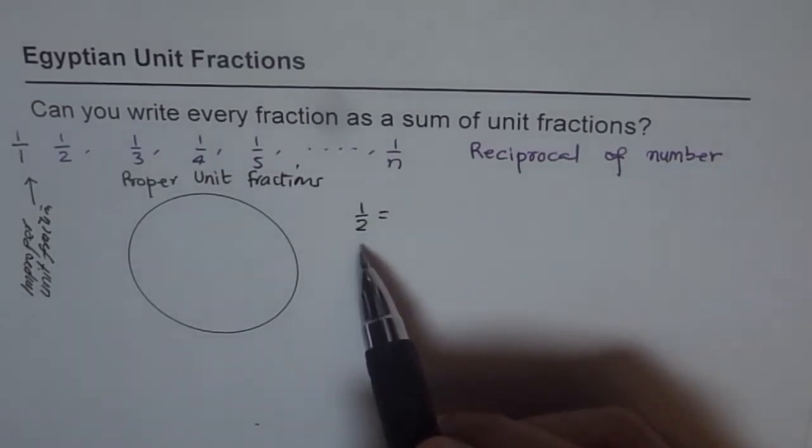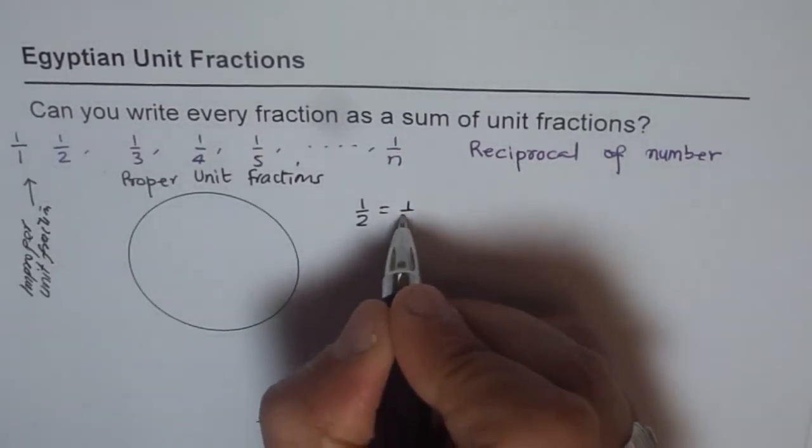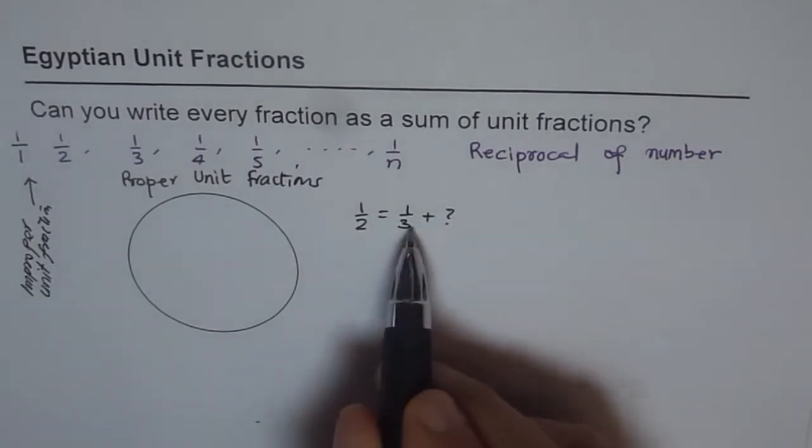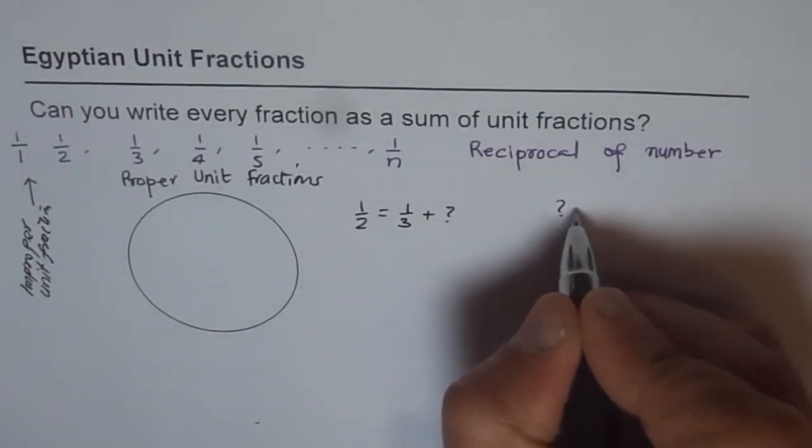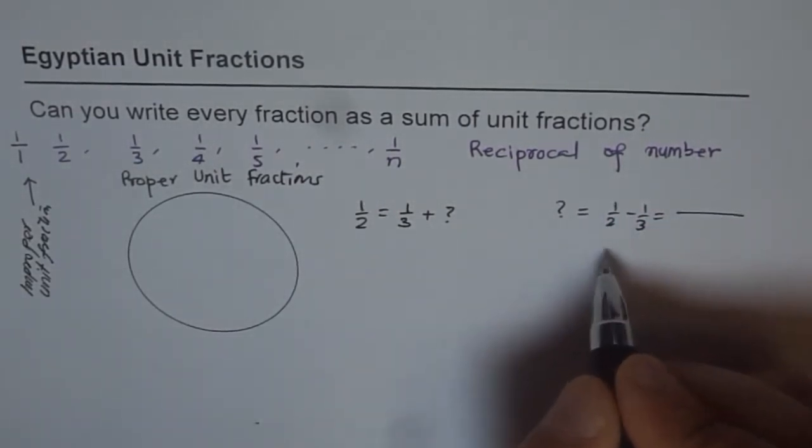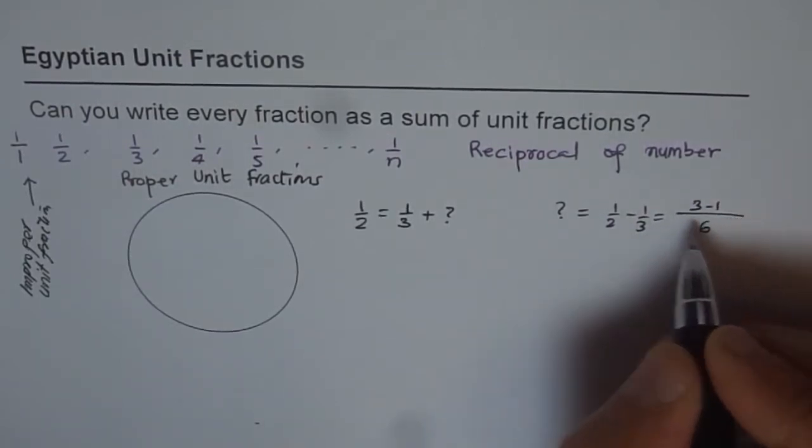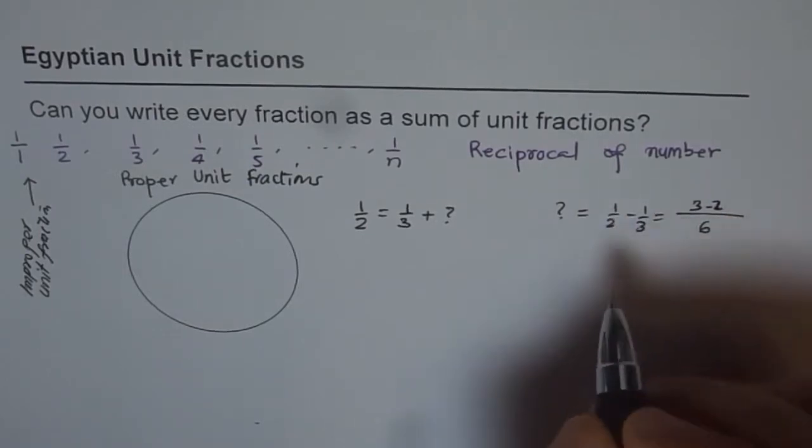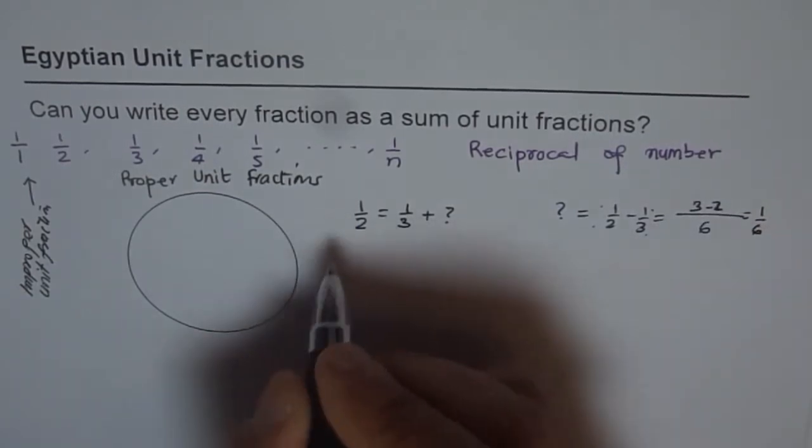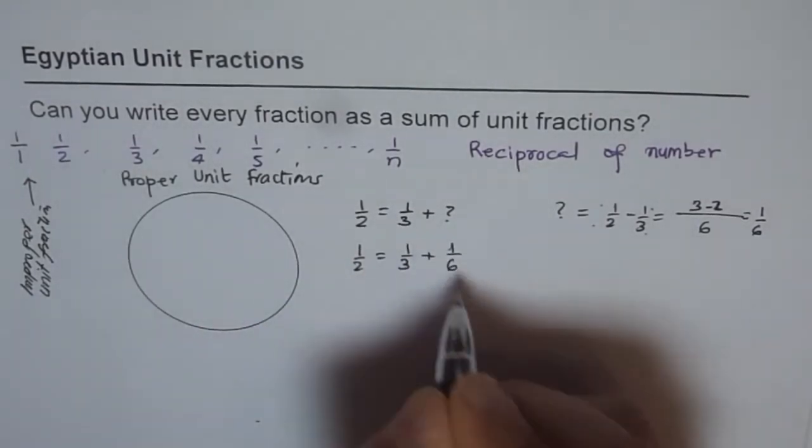Now let's see if we can write half as a combination of unit fractions. Well, the number less than half is 1 over 3. So it has to be 1 over 3 plus something. And what is that something? That something should be half minus 1 over 3. So let's figure it out. So that something should be half minus 1 over 3. And that is, we'll take common denominator, multiply, cross multiply, which is 6 and 3 minus 2. So we get 3 minus 2, which is 1 over 6. So I can write half as equals to 1 over 3 plus 1 over 6.